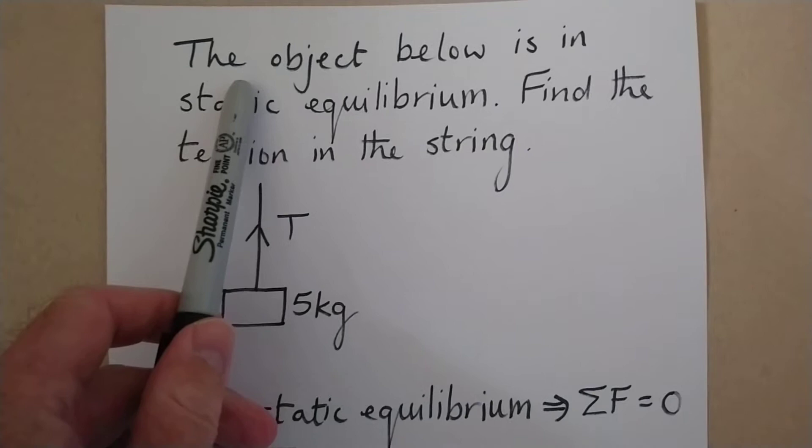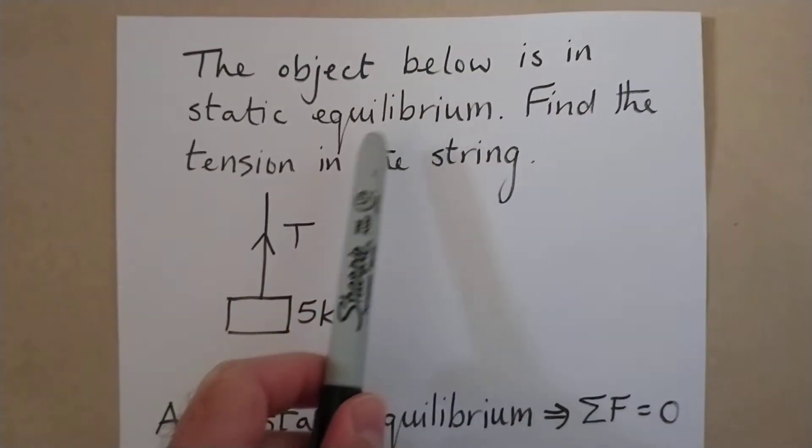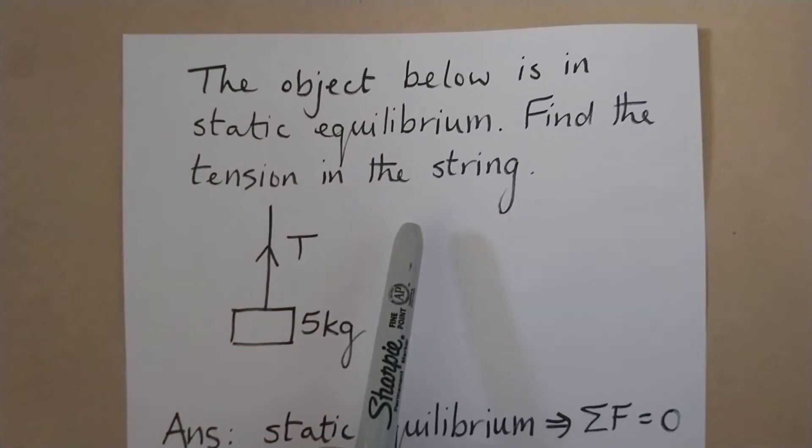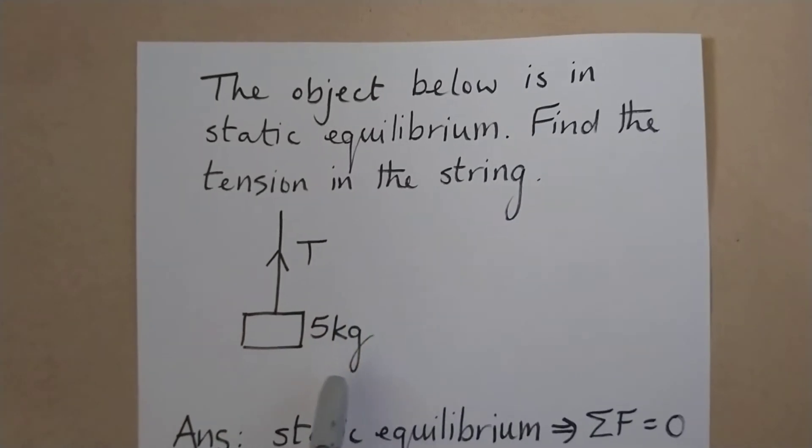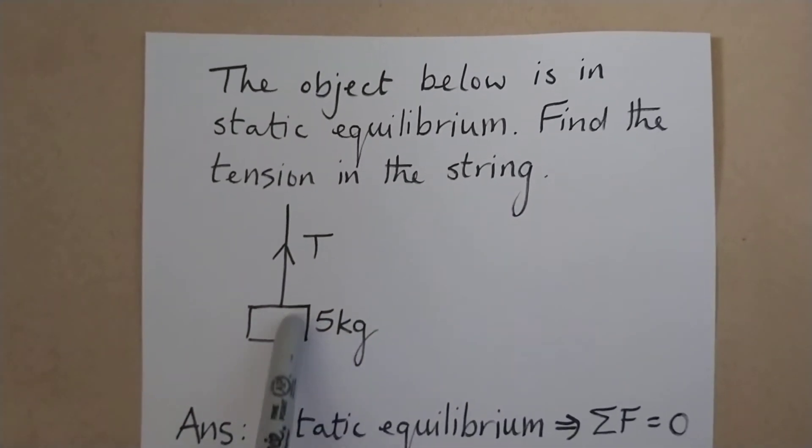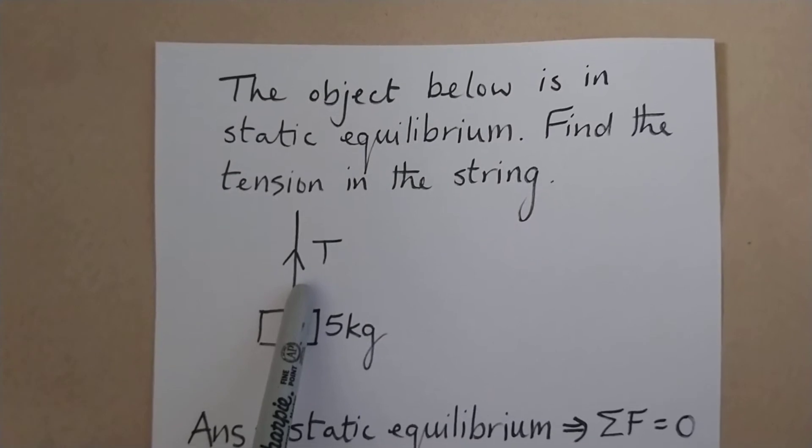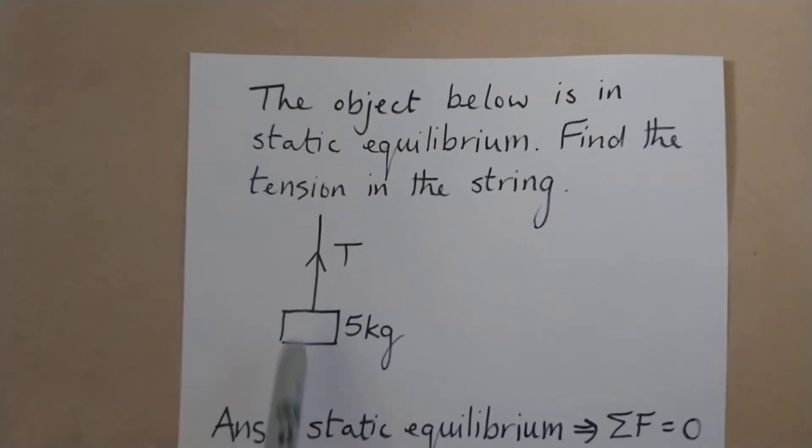We've been told that the object below is in static equilibrium and been asked to find the tension in the string. We've got a 5 kilogram mass that's simply being supported by the string, so the tension is pointing vertically upwards.